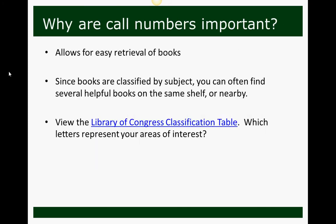Call numbers allow for the easy retrieval of books. If you look something up in the catalog, it's going to give you the call number, and if you don't know exactly where to go, a librarian does. Also, since books are classified by subject rather than by author, you can often find several helpful books on the same shelf or nearby. For example, if you're looking for World War II poetry and you're in that section of the stacks, you might look around and find similar books.